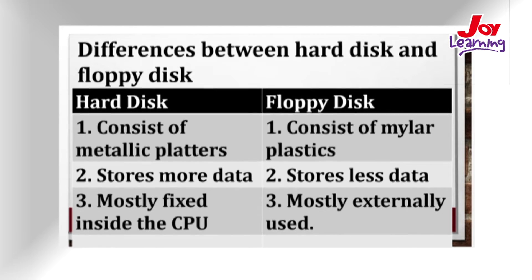Differences between the hard disk and the floppy disk: the hard disk consists of metallic plates while the floppy disk consists of mylar plastic. The hard disk stores far more data — the floppy disk holds up to 1.44 megabytes while the hard disk stores more than any storage media. The hard disk is also mostly fixed permanently inside the system unit.